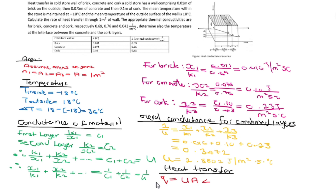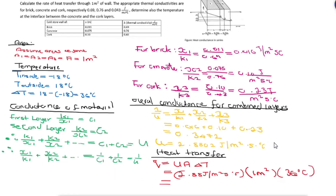Finally, determine the overall heat transfer using Q equals U times A times delta T. We have calculated everything needed, so simply substitute the values. You will get an answer in joules per second, which is basically in watts.